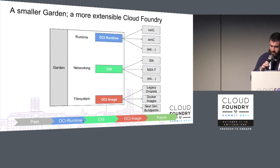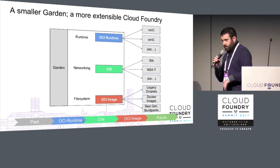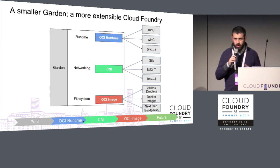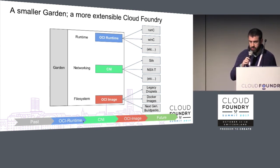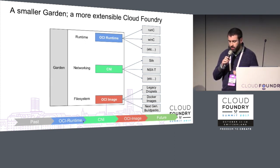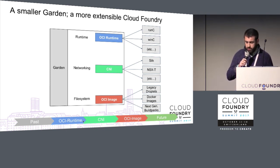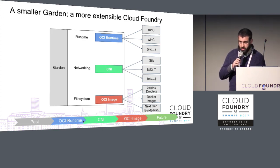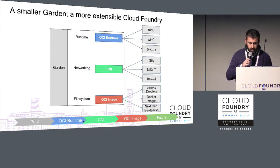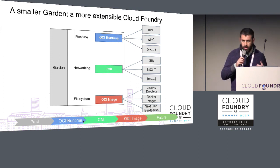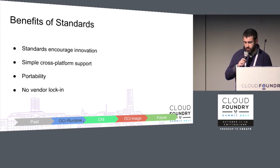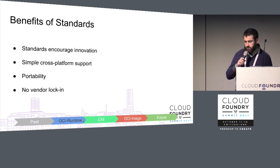With all these standards it's pretty great — we get a much smaller Garden and a much more extensible Cloud Foundry. Using the OCI runtime, we can run containers on runc on Linux, winc on Windows, maybe Clear Containers, maybe other container runners in the future. Because we have CNI support, we can use various networking plugins to plug into software-defined networking solutions and cloud networking solutions. Because we have OCI images, we can support legacy droplets, Docker images, OCI images, next-generation buildpacks, and all sorts of other workloads. This is the story of moving towards standards, having less code to support, encouraging innovation, better cross-platform support, better portability, and less vendor lock-in.